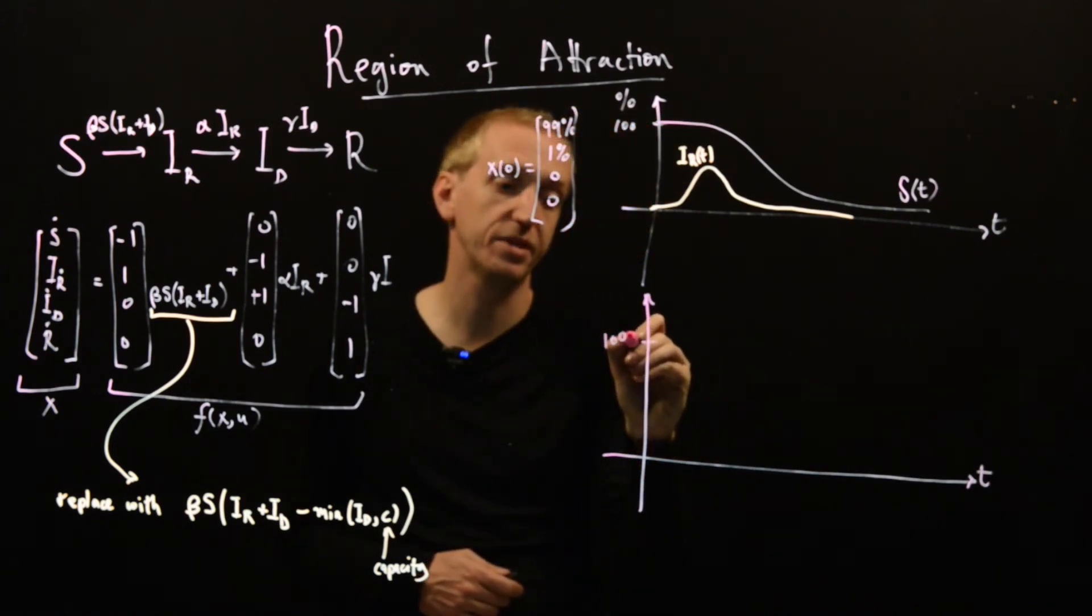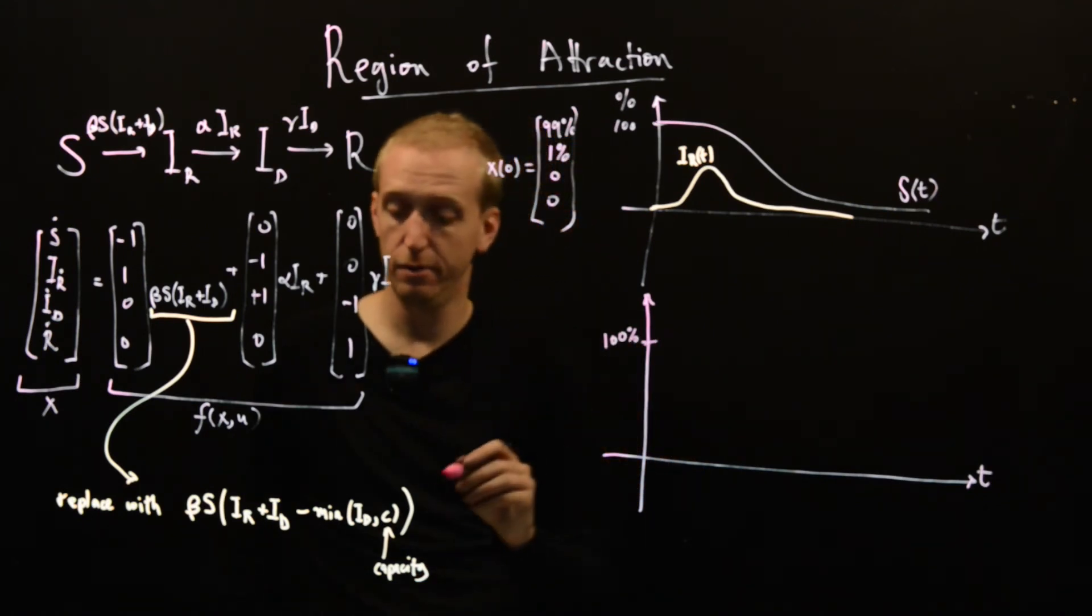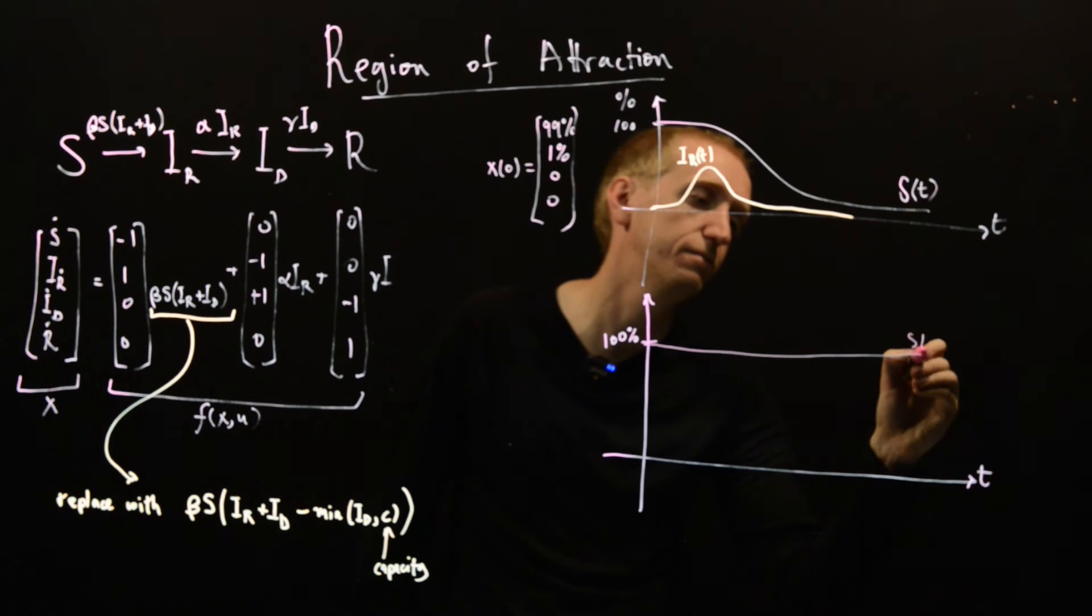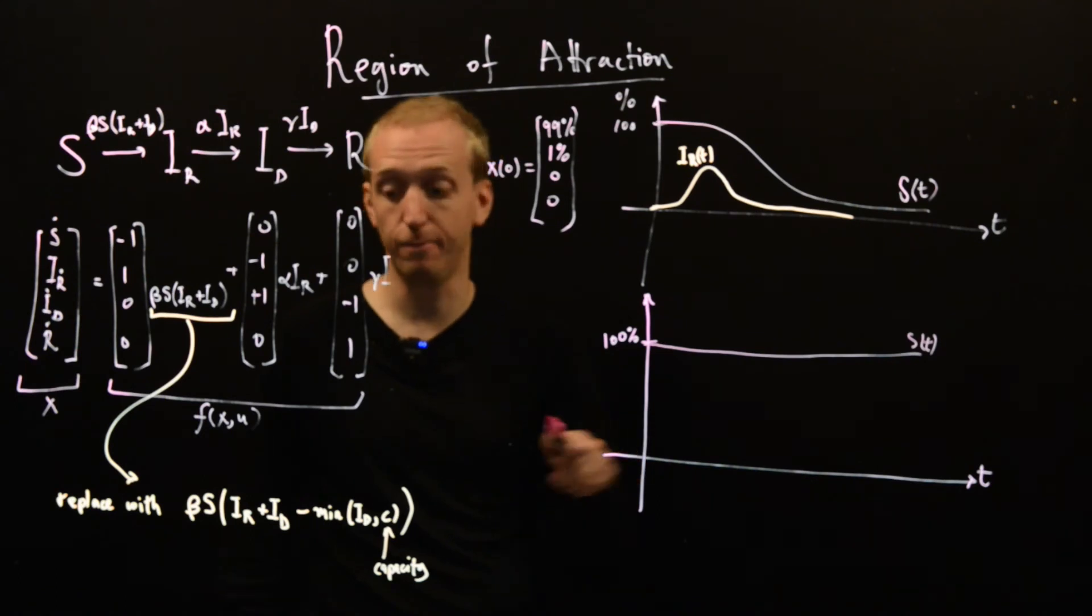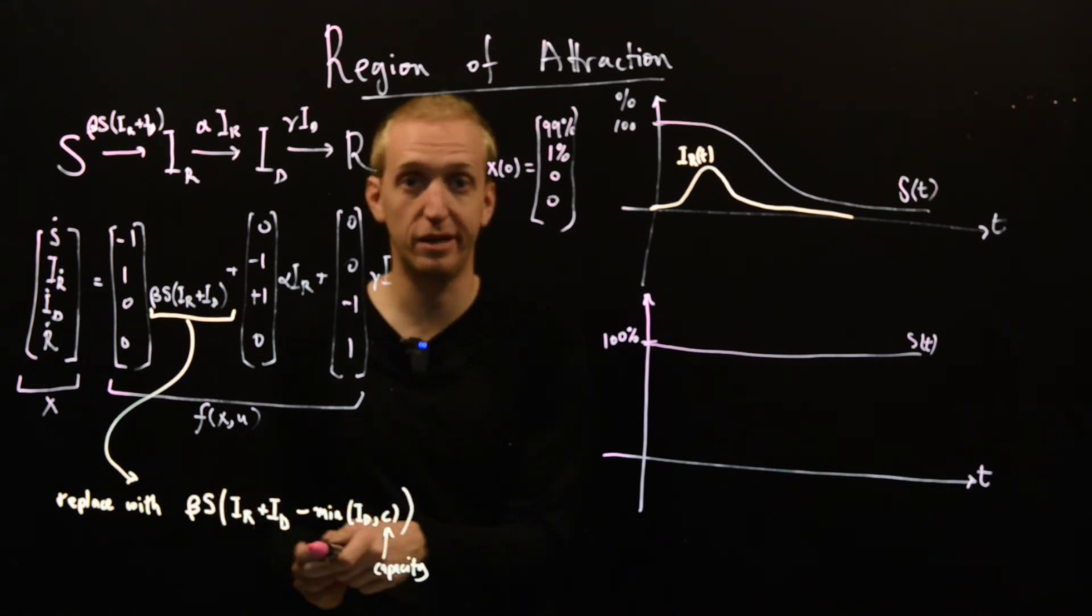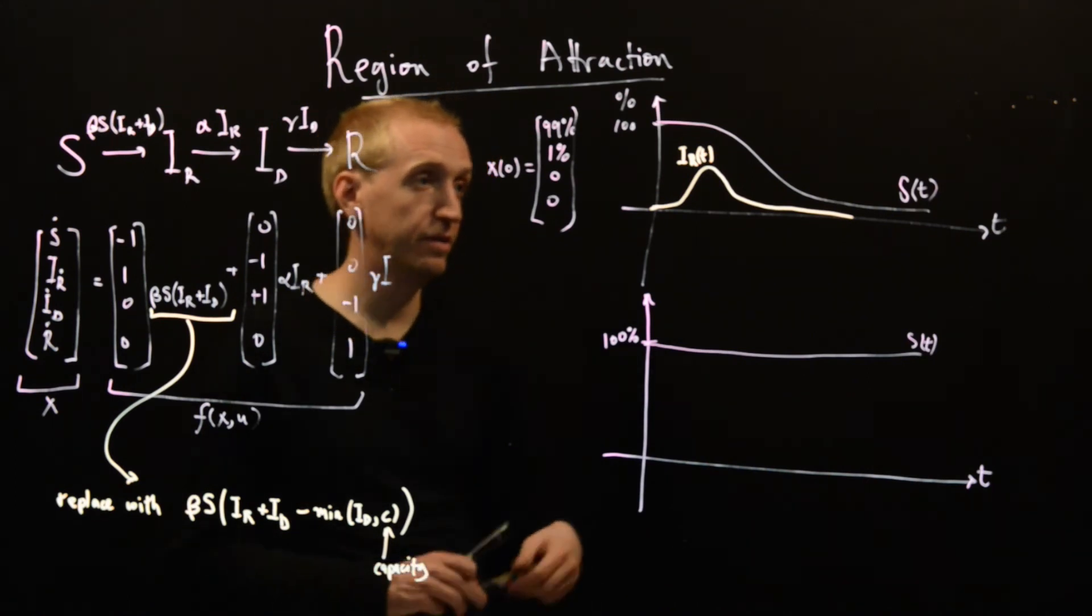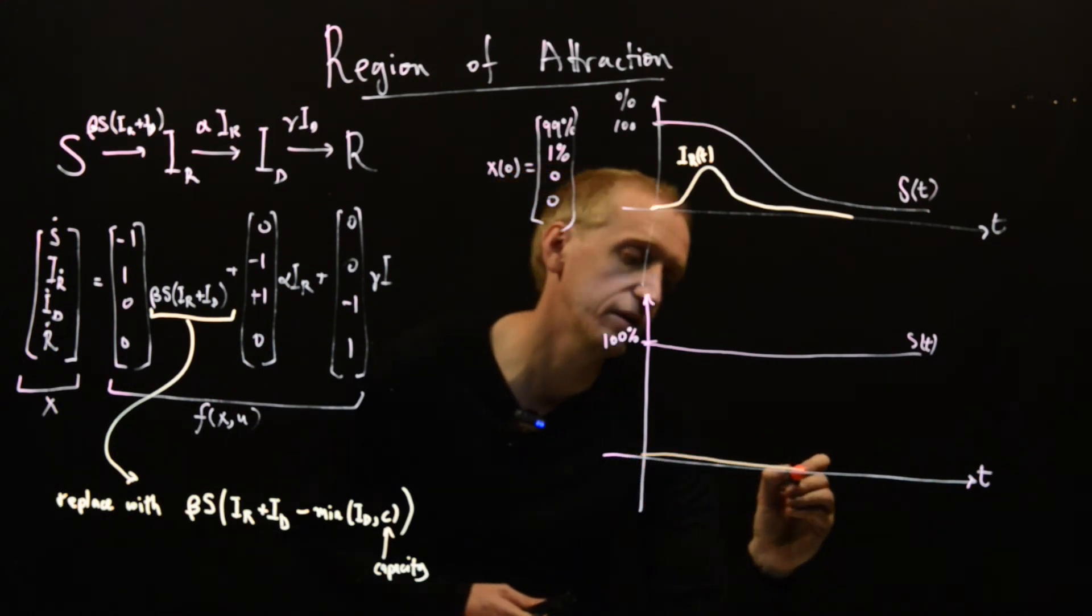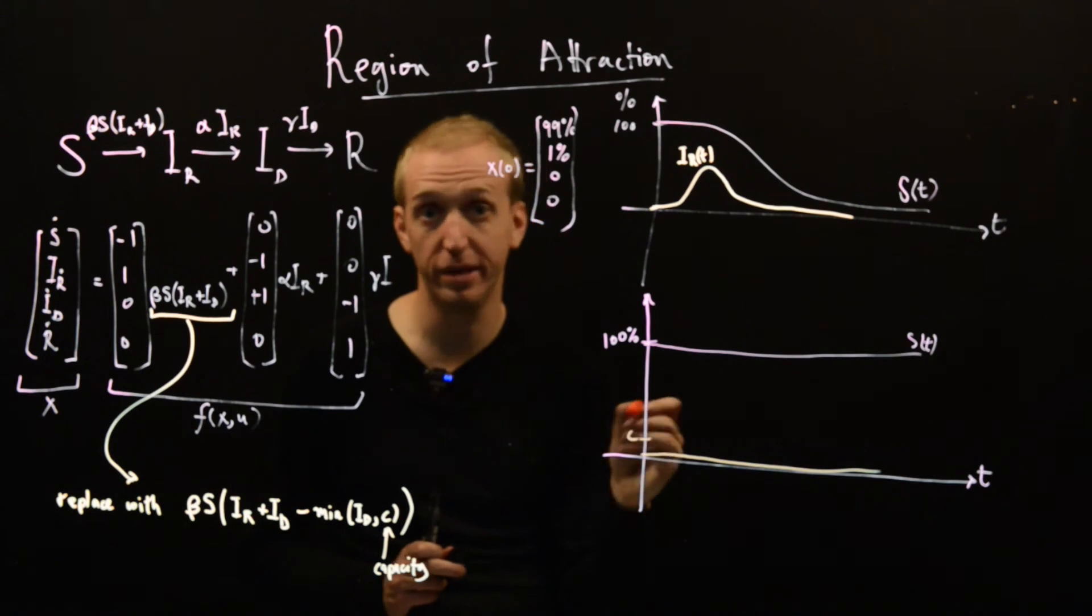So what happens if we simulate this model instead? Well we'll take the same initial condition. And what happens now? As before the susceptible population it starts just below 100. But now basically nothing happens. S more or less remains constant. And this is indicating that our test and trace system is working. We're pulling people out so fast that we're able to keep the number of infectious and susceptible interactions very low. And the disease doesn't manage to spread. And if you plot the ID curve it starts at 1% and goes something like that. And I should say that this all depends on what the capacity is. So we're assuming here that our capacity is quite a bit larger than 1%.